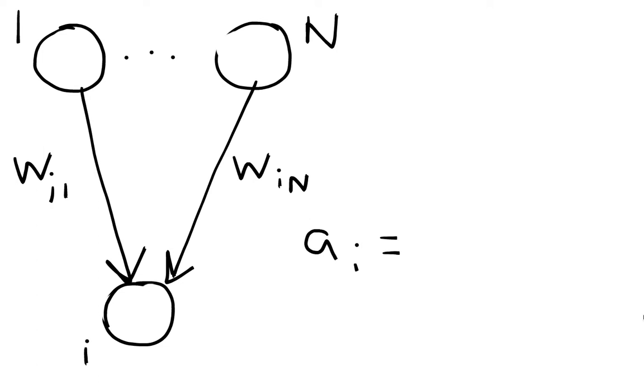We can represent this mathematically as follows: the activation of neuron i equals the sum over all n neurons that influence it, where the influence of any incoming neuron j equals the weight W_ij multiplied by the activation of neuron j.